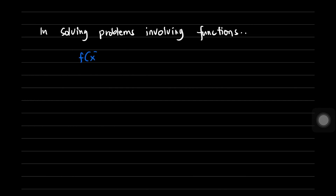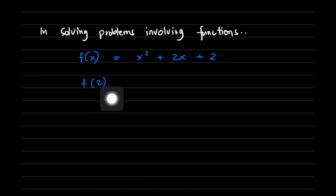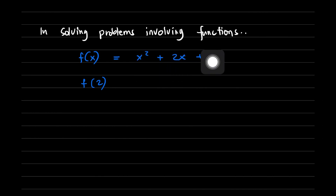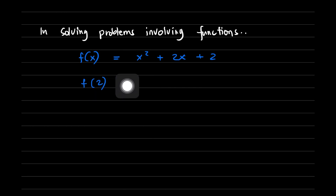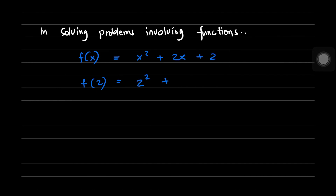In solving problems involving functions, say we are given f(x) = x² + 2x + 2. If we are required to find f(2), we just replace x with the argument. So f(2) becomes 2² + 2(2) + 2. That is equal to 4 plus 4 plus 2, which is equal to 10.